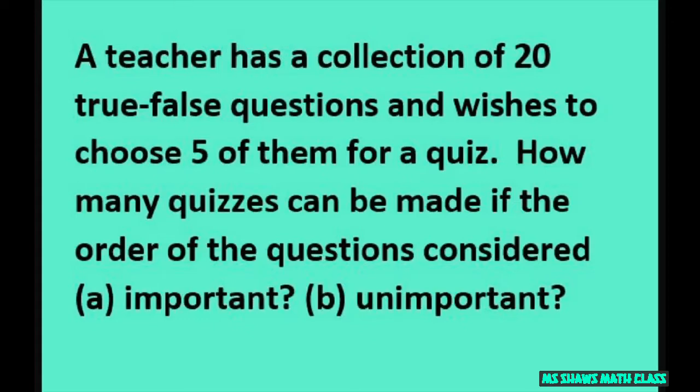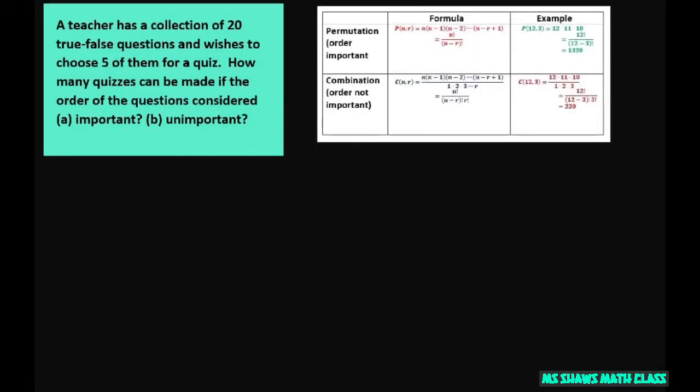So we're talking about order being important and unimportant. So we're going to be using a permutation where order is important and a combination where order is not important.